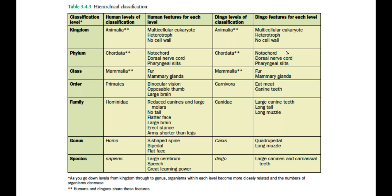The kingdom Animalia means that we are a multicellular eukaryote — all of our cells have a true nucleus as well as other membrane-bound organelles such as the mitochondria. We are heterotrophic, meaning we need to take in nutrients from somewhere else, and we have no cell wall. The phylum Chordata means we have a notochord, a dorsal nerve cord (our spinal cord), and pharyngeal slits. These slits disappear during the embryonic stage, but when we are in that embryonic stage, they help us to breathe whilst in the womb.